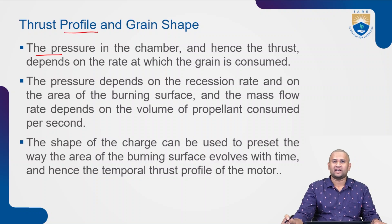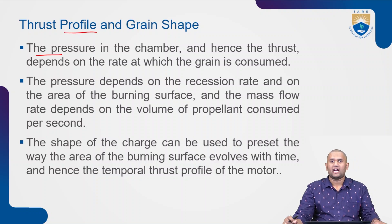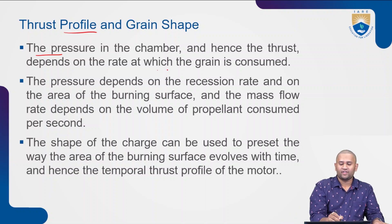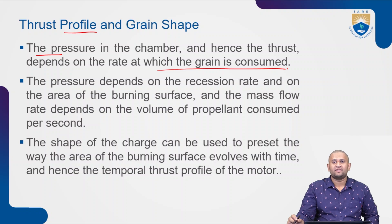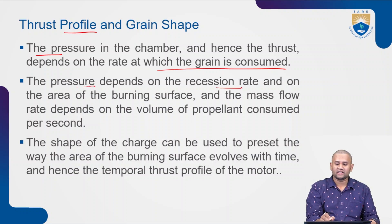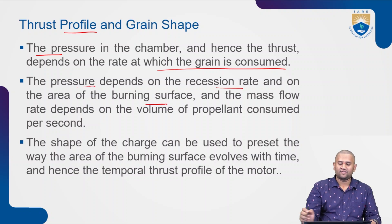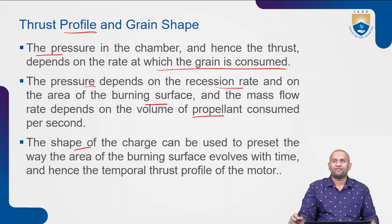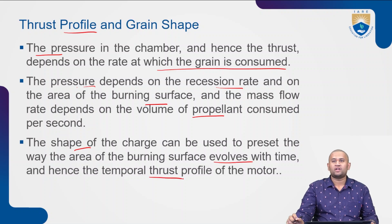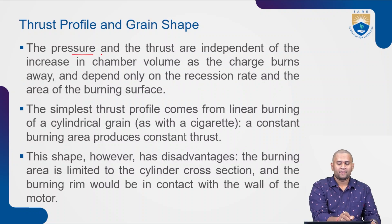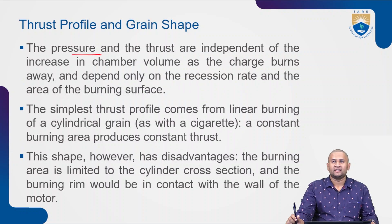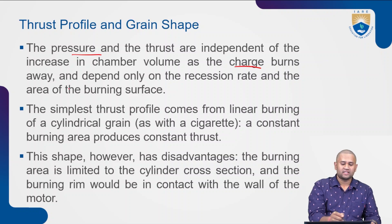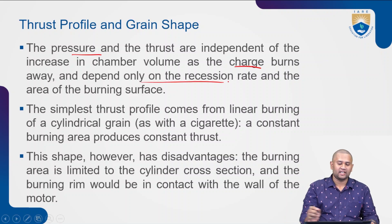Coming to thrust profile and grain shape: the pressure in the chamber, and hence the thrust, depends on the rate at which the grain is consumed. The pressure depends on the recession rate and on the area of the burning surface, and the mass flow rate depends on the volume of propellant being consumed per second. The shape of the charge can be used to preset how the burning area evolves with time, and hence the temporal thrust profile of the motor. The pressure and thrust are independent of the increase in chamber volume as the charge burns away, and depend only on the recession rate and area of the burning surface.